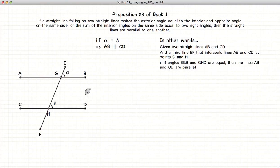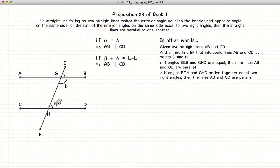The second part of this proposition states that if the interior angles, in other words, beta and delta, sum up to the sum of two right angles, then again, AB and CD are parallel.